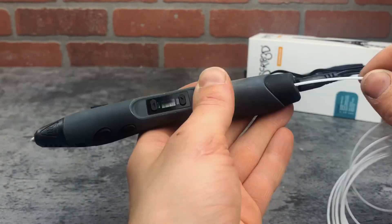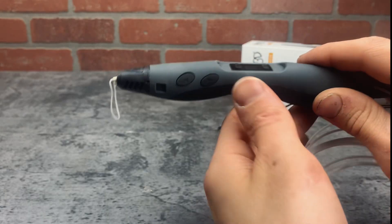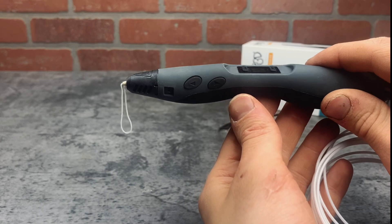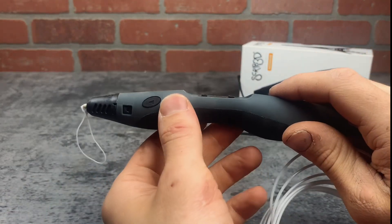When you're done, just tap that forward button again. If you want to take the filament out, then you need to hold the back arrow for about five seconds and then it'll start pushing it out the back.